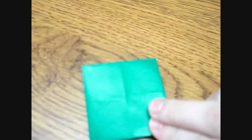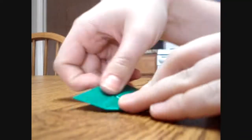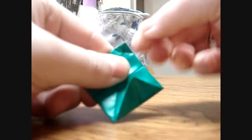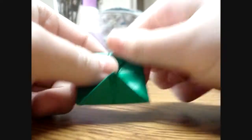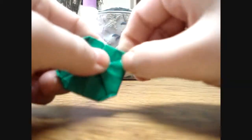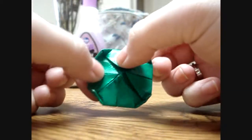And then once you've done that three times, you're going to flip it over and you're going to do the same thing again. Once you've done that, you're going to take these corners here and you're going to fold them down about a quarter of the way. It doesn't really matter exactly how much it is. You don't have to be too precise.